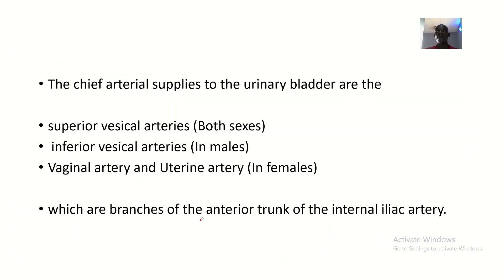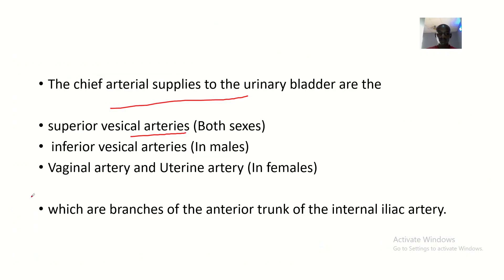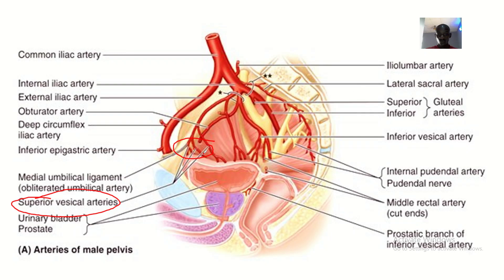Just focus on what we have in this lecture. The chief arterial supply to the urinary bladder are the superior vesical arteries. You can see them here — there are three of them. So the superior vesical arteries are the chief arterial supply to the bladder.